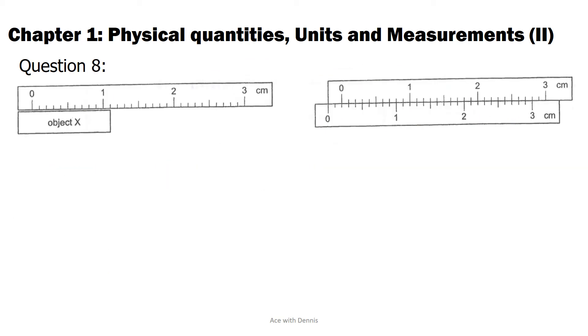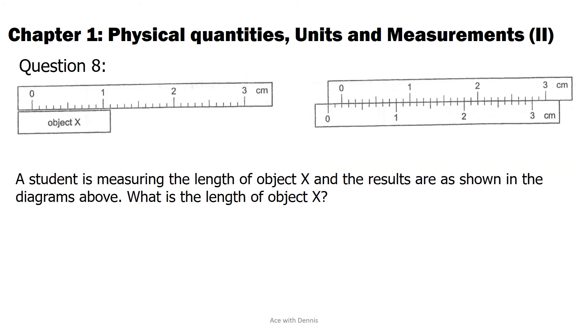Question 8. A student is measuring the length of object X and the results are as shown in the diagrams above. What is the length of object X? A. 1.1 cm. B. 0.9 cm. C. 1.3 cm. D. 1.5 cm.